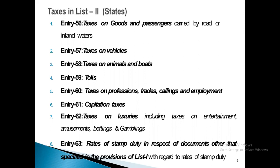Entry 58: taxes on animals and boats. Entry 59: taxes on tolls. Entry 60: taxes on professions, trades, callings, and employment. Entry 61: capitation taxes. Entry 62: taxes on luxuries including entertainment, amusement, betting, and gambling. Entry 63: rates of stamp duty in respect of documents other than those specified in List 1. This covers all central and state tax entries in Lists 1 and 2.